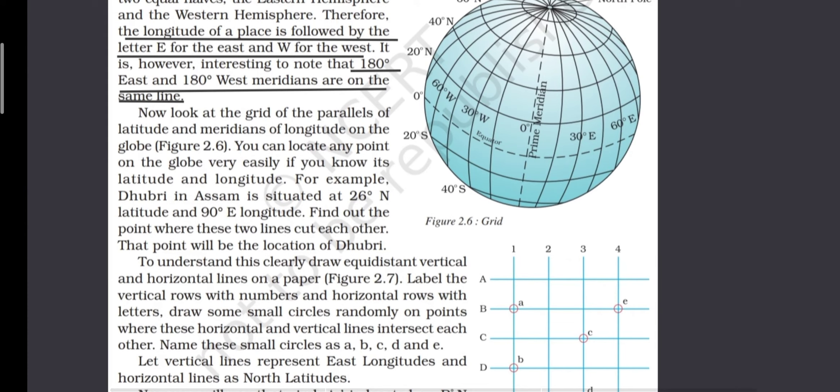Look at the grid of the parallels of latitude and meridians of longitude on the globe, figure 2.6. You can locate any point on the globe very easily if you know its latitude and longitude. For example, Dibru in Assam is situated at 26 degrees north latitude and 90 degrees east longitude. Find out the point where these two lines cut each other — that point will be the location of Dibru.